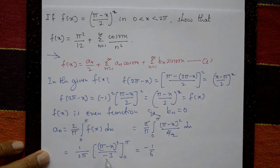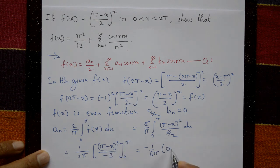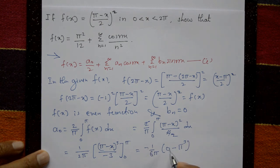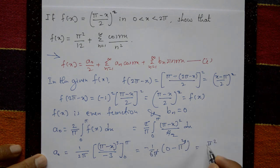Taking minus 1 by 6 outside, applying limits: upper limit term is 0, lower limit gives π³. The minus signs combine: minus times minus gives plus, one π cancels, leaving π². Therefore a₀ equals π² by 6, and a₀ by 2 equals π² by 12.